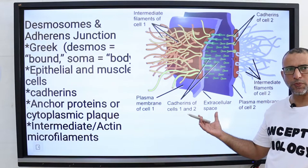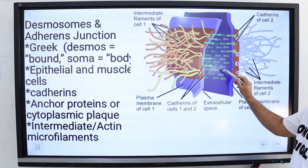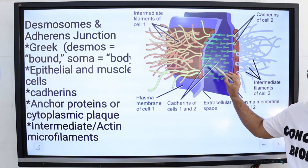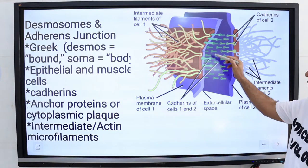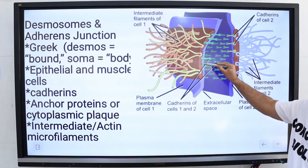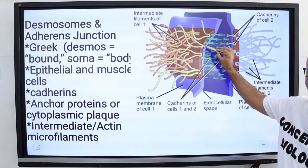Structure of desmosomes: Desmosomes are composed of three components. Number one is transmembrane adhesion protein called cadherins. Number two, anchor protein called cytoplasmic plaque which is present inside the cell membrane. And number three is intermediate filaments.